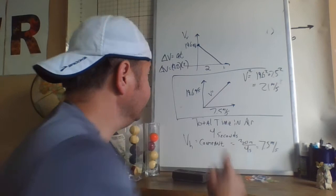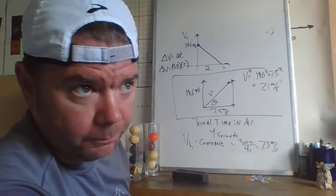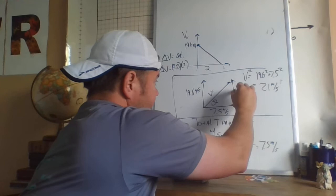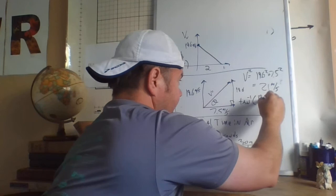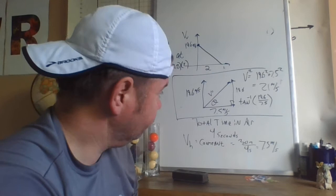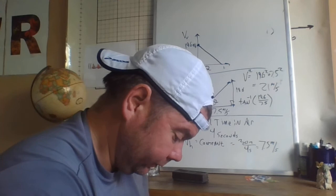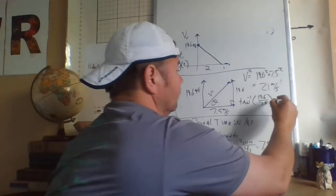This angle, we've done these, there's practice problems where we've done this. The angle at which the ball was thrown, this is 19.6, that's 7.5, that's opposite, that's adjacent. And so inverse tangent of opposite over adjacent gives you about 69 degrees.